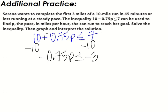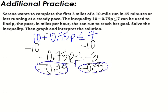And the reason it's less than or equal to, because we want to do it in that amount of time or less. So we want to do it in that amount of time or less. So if we can do it faster, that would be great. So now we're going to divide by negative 0.75. And don't forget, we just divided both sides by a negative. So we need to flip our sign, and we get p is greater than or equal to, a negative divided by a negative is a positive.